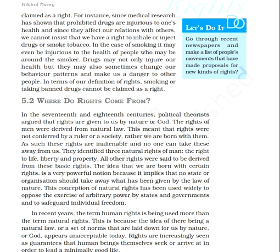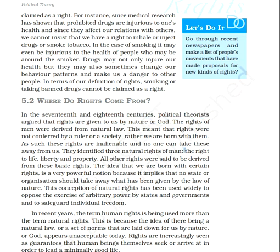Now the next part of the chapter is: where do rights come from? In the 17th and 18th century, political theorists used to argue that these rights are given to us by nature or God, and that is why these rights are inalienable — they are inseparable and cannot be taken away from you. These were called natural rights because they were derived from natural law. The three natural rights of human beings are: right to life, right to liberty, and right to property.